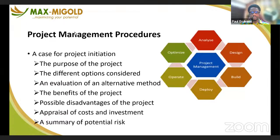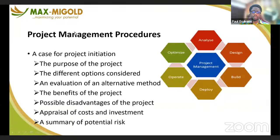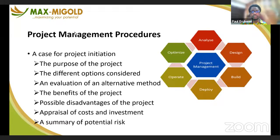When going through project management, there are different parts of the project you must understand. One of the first things to look at is the purpose of the project — you must be able to define what that purpose is. You also need to look at the different options considered while looking at the project, analyze the best ways to run it, consider different methodologies, and evaluate alternate methods of achieving results.